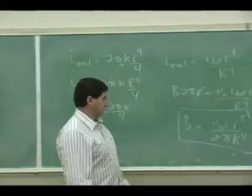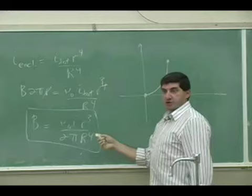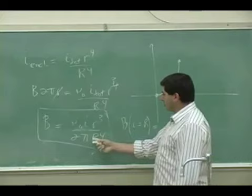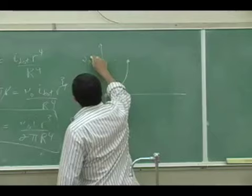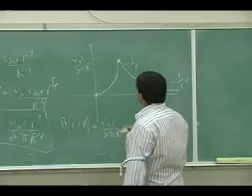And then the B field now for a wire goes up as a cubic. And then again, you can check for continuity. When you put little r is big R over here, you should get mu zero I total over 2 pi R cubed R to the fourth. So you should end up being mu zero I total over 2 pi R. So again, the maximum current, the maximum magnetic field is mu zero I total over 2 pi R. And then after that, it decreases as one over R.